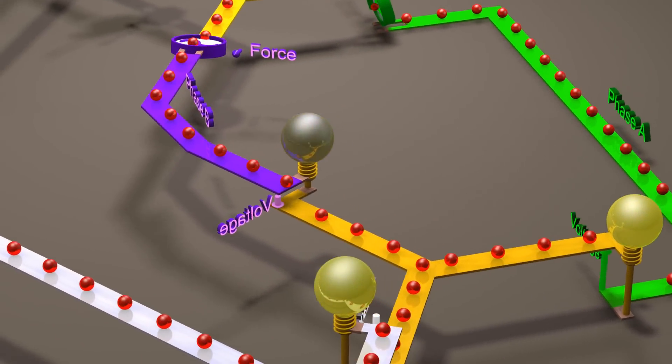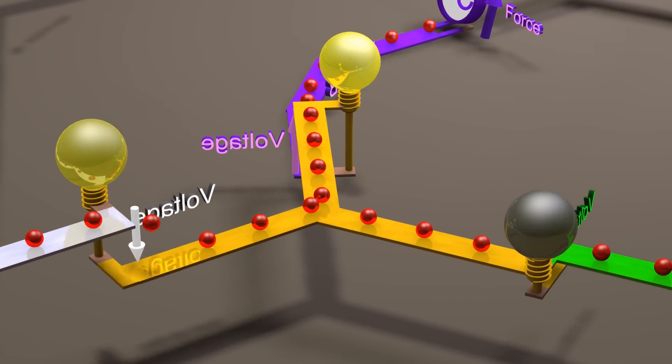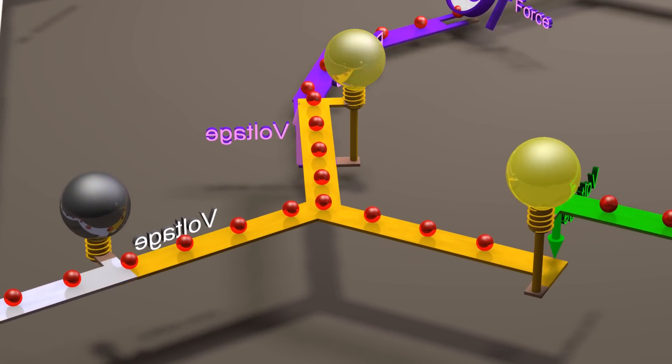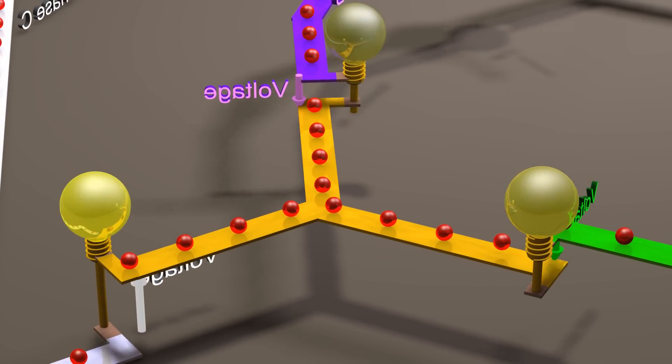The total power will also be constant if instead of connecting each lightbulb between a line and the neutral, we connect each of the lightbulbs directly line to line.